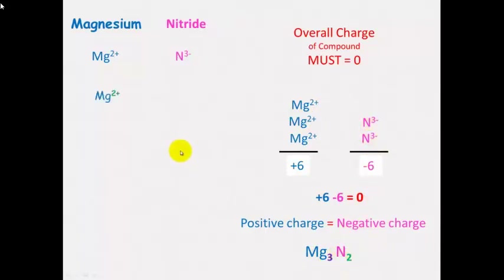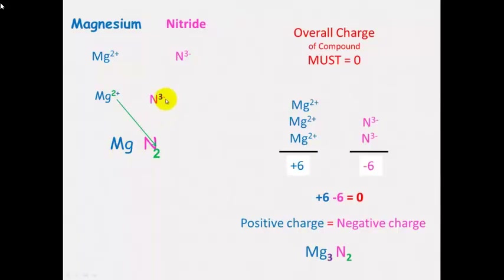Using the cross method for magnesium nitride: for the number of nitride ions needed, look at the valency on the magnesium, which is 2, so you need 2 nitride. For the number of magnesium ions, look at the valency on the nitride, which is 3, so you need 3 magnesium.